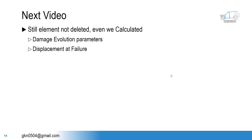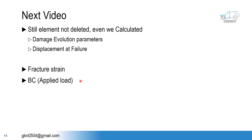These two governing parameters basically decide whether my element will be deleted or not. Apart from those two parameters, we have the fracture strain and boundary condition. Fracture strain plays a very crucial role here, and for the boundary condition there is a very simple fundamental: your applied load should be sufficient enough to generate strain more than the fracture strain. Then only the element deletion will take place; otherwise it will be useless.